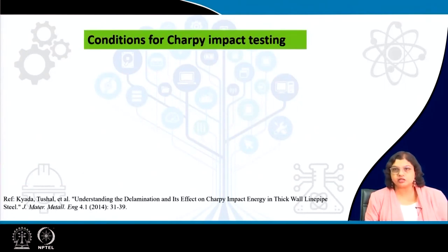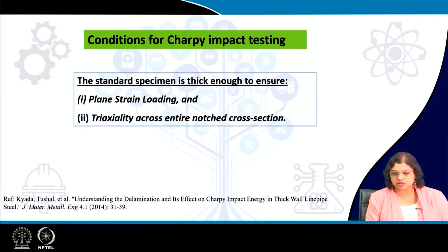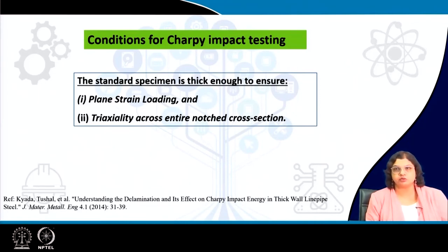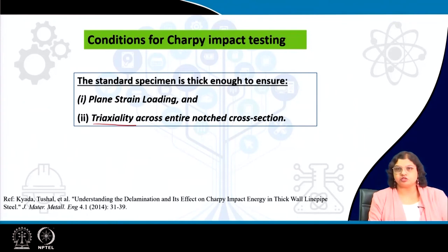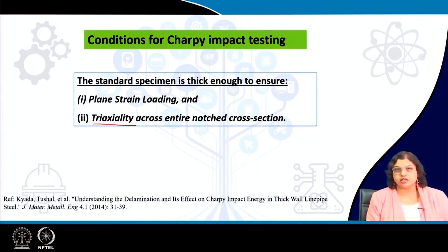The typical conditions used for the Charpy impact test are: first of all, a plane strain loading condition must be maintained — we want to determine the material property, so the notch depth, specimen thickness, and width are all considered to achieve plane strain loading. Also, the notch length creates triaxiality at the notch tip, as just discussed. All these restrictions lead to the lowest value of fracture toughness, and these are considered while designing the Charpy impact test — all standardized and available in standard handbooks.